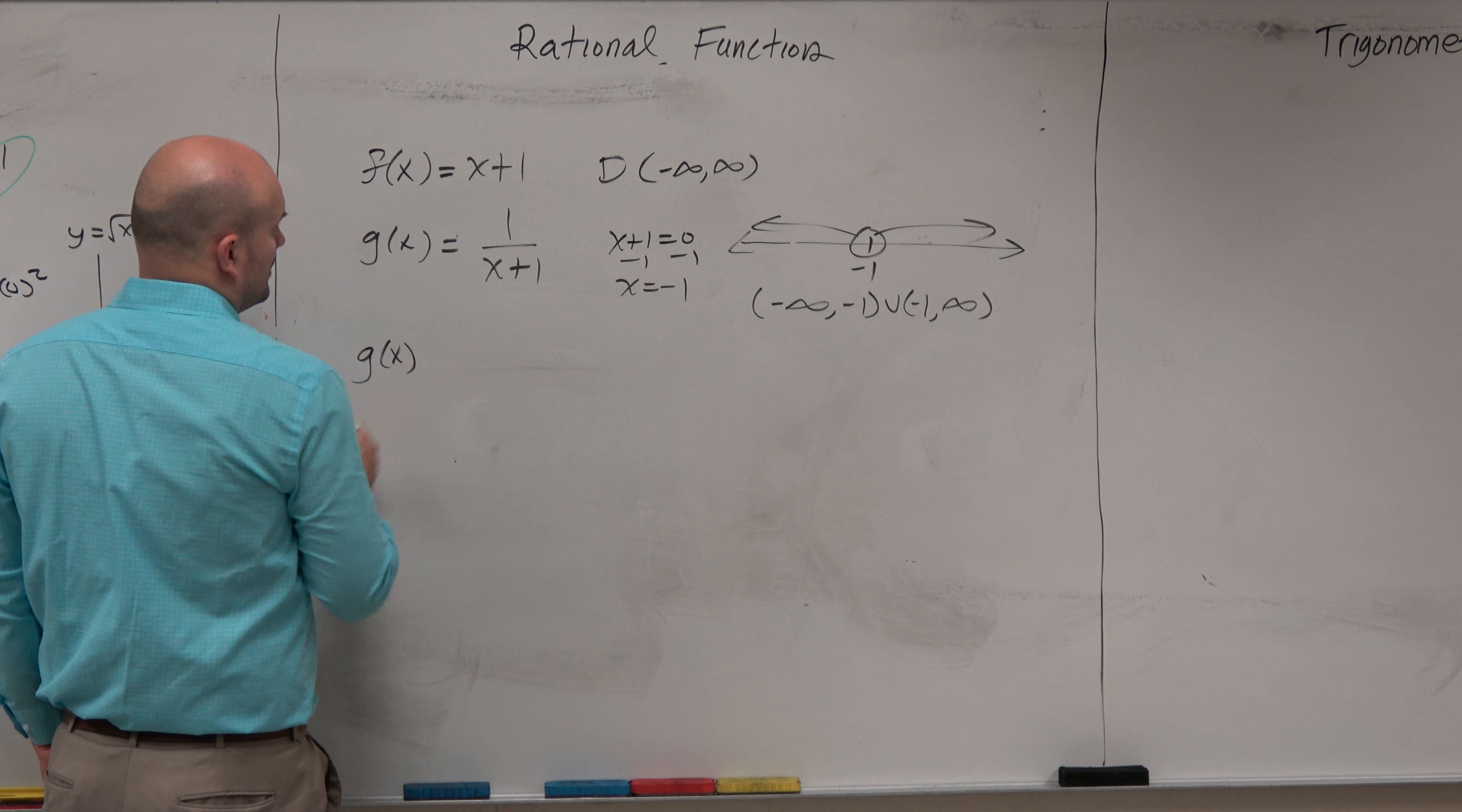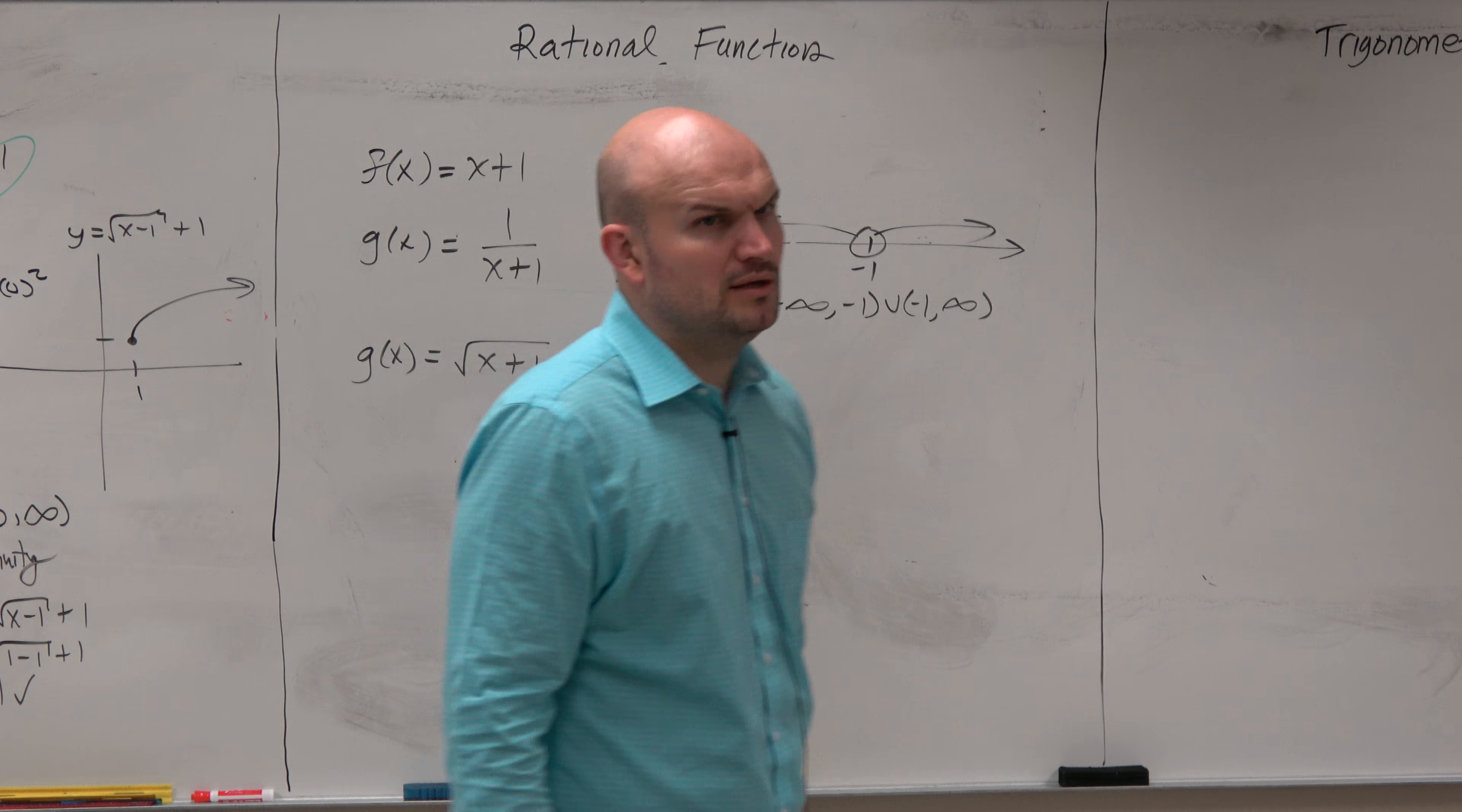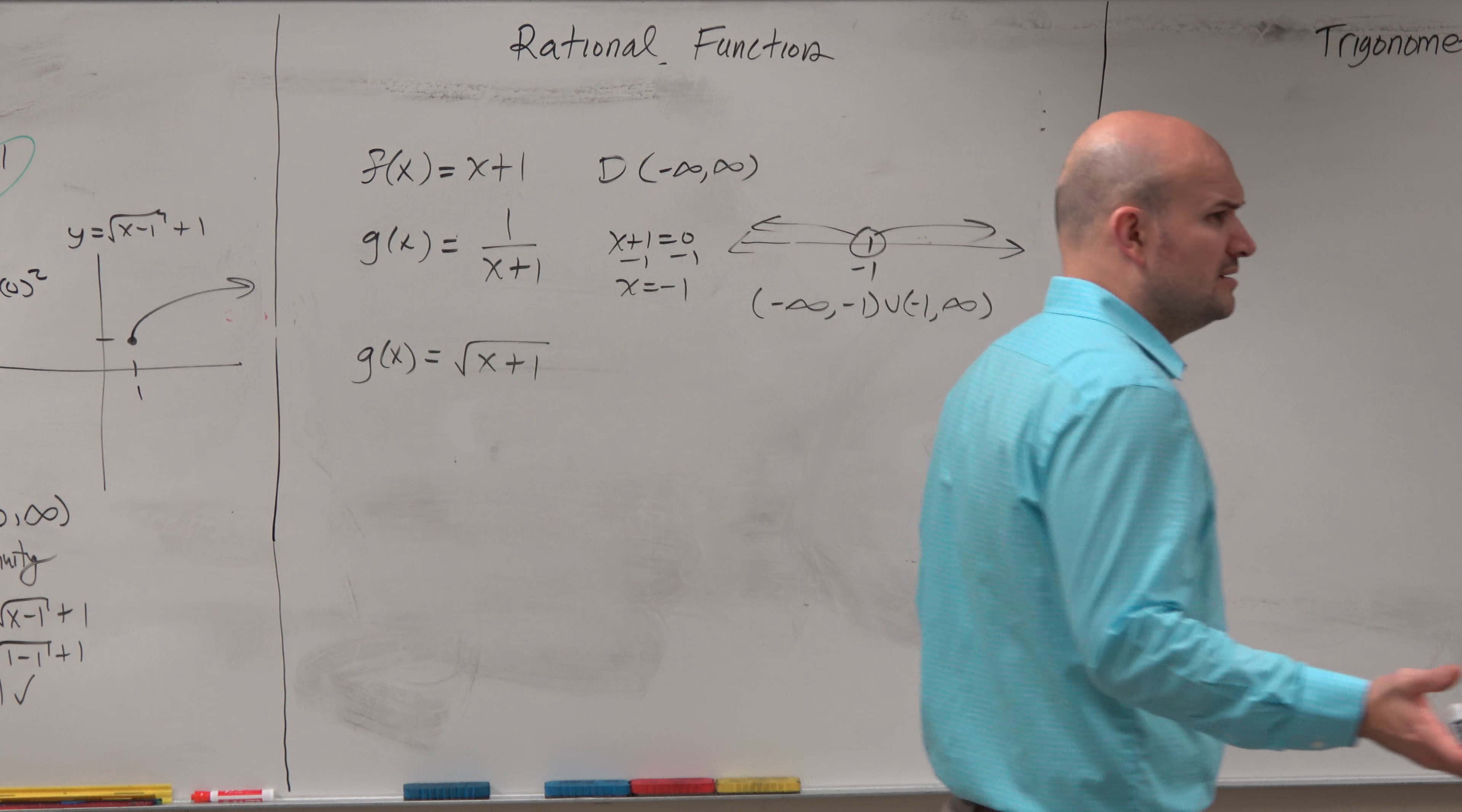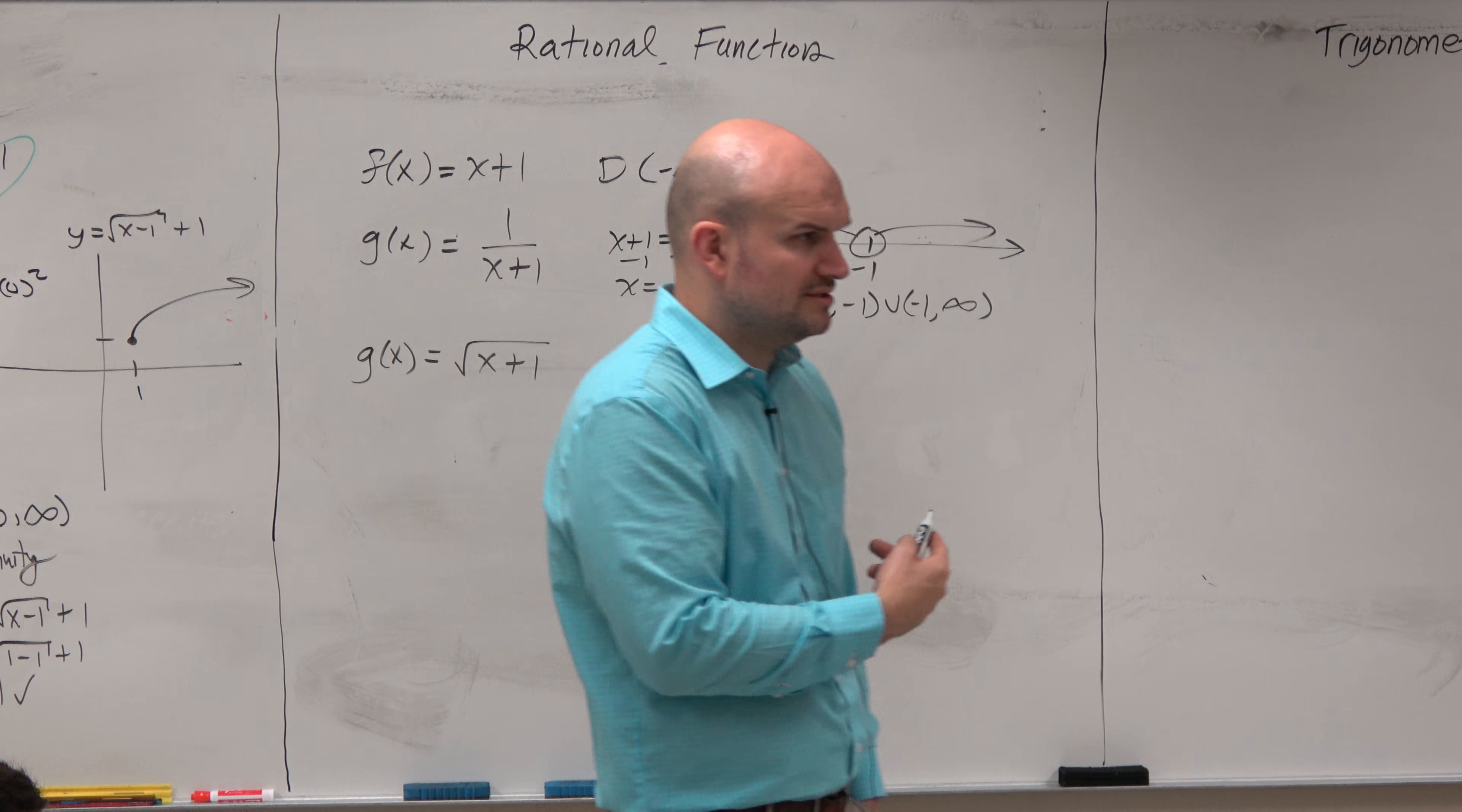What about g(x) equals square root of x plus 1? And then you say, oh, well, what about negative 1 here? Negative 1 makes it 0, but that's OK. You can take the square root of 0. Is there a reason why? Do you just want to take the test? I mean, we're reviewing, so it would be good to pay attention to the review.